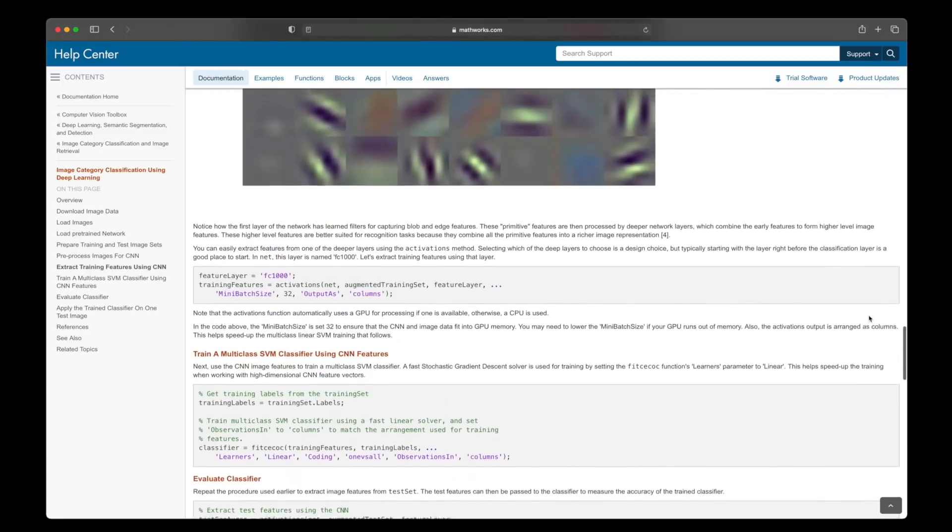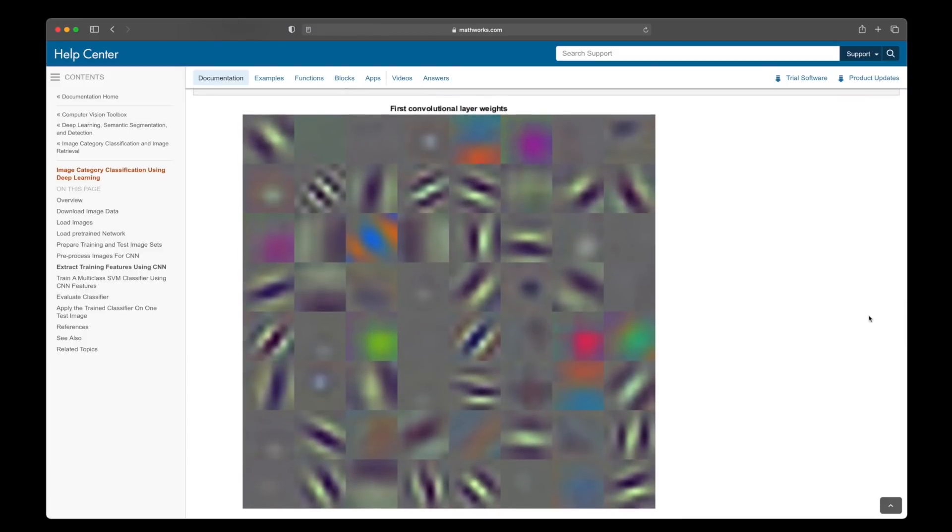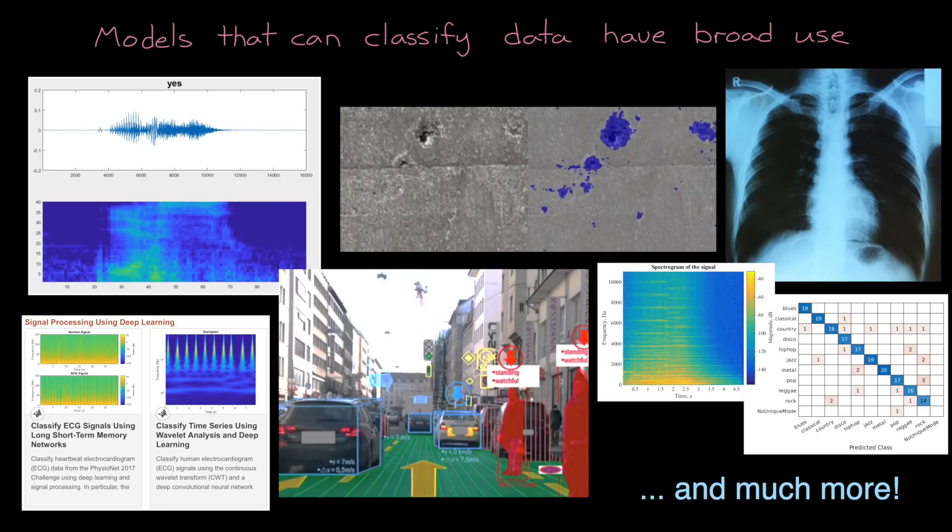And if we scroll back up, what we're seeing here is a visualization of the first convolutional layer weights. These are the primitive features that help this network distinguish between a daisy and something else. Again, it seems likely that these aren't the features that a human would come up with if they were trying to define the features of a flower. At least, I don't think I would. But this is why deep learning is so powerful for certain engineering problems, specifically problems that involve finding patterns in an image where the defining features are difficult to describe.